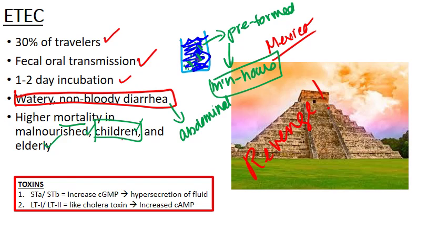There are two sets of toxins with ETEC. The heat-stable STA toxin — STA being the one associated with human disease — causes an increase in cyclic GMP, which is guanosine monophosphate. Cyclic GMP regulates secretion of fluids, so when you have an increase, you get hypersecretion of fluid combined with inhibition of fluid absorption, giving you what's called high-volume diarrhea. Anytime you have really watery diarrhea, you're thinking high-volume diarrhea.